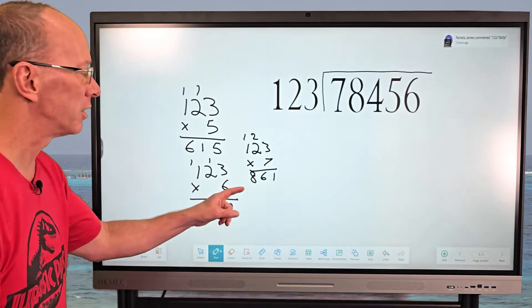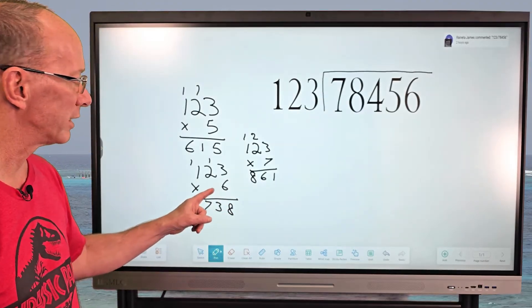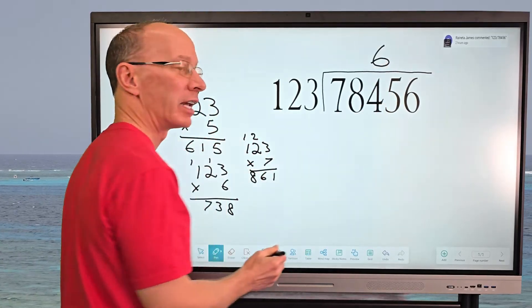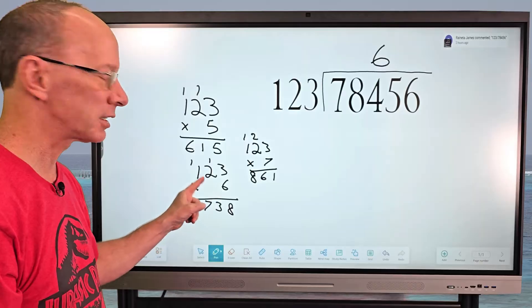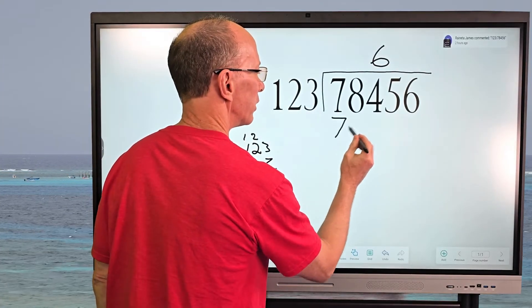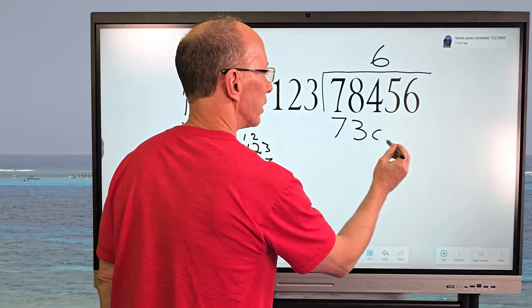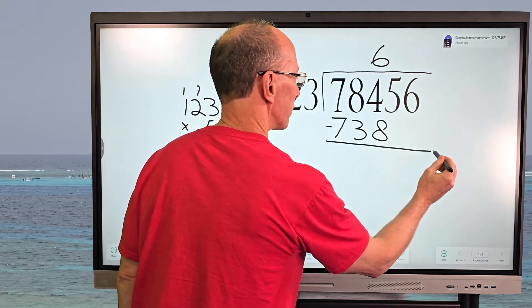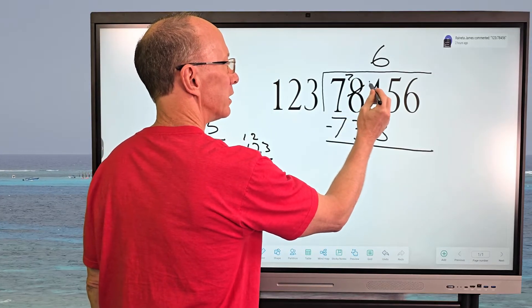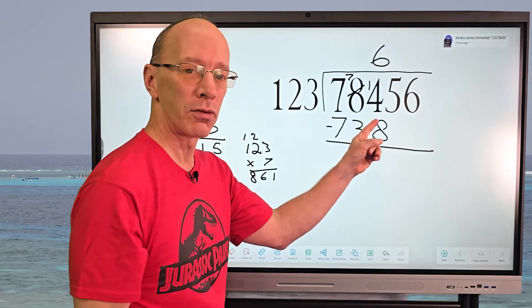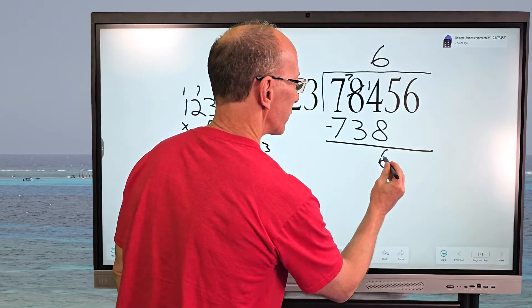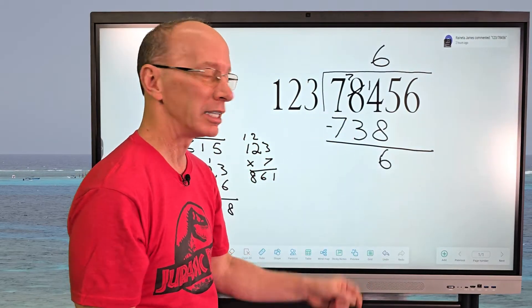As you can see, 861 is too big. We're going to stay with six. So I'm going to go ahead and put the six right here. And then I multiply six times 123 right here. Six times 123 is 738. So go ahead and put 738 right here. And I'm going to go ahead and subtract it. So then I need to borrow from the eight right here. So this turns into a seven. This is a 14 now. And 14 minus eight is six. So go ahead and put a six right here. And then seven minus three is four.